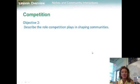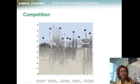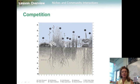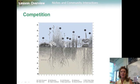Our next objective is to describe the role competition plays in shaping communities. How one organism interacts with another is an important part of defining its niche. Competition occurs when organisms attempt to use the same limited ecological resources in the same place at the same time. In a forest, plant roots compete for resources such as water and nutrients in the soil. Animals compete for resources such as food, mates, and places to live and raise their young. Competition can occur both between members of the same species — known as intraspecific competition — and members of different species — known as interspecific competition.